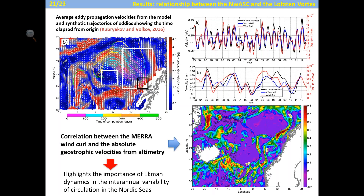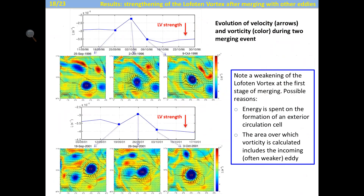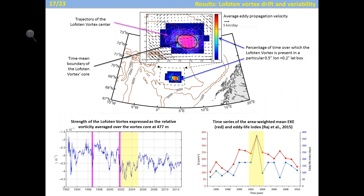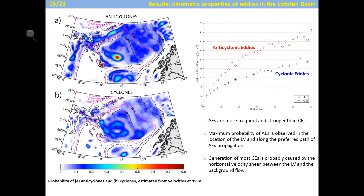When asked how large cyclonic eddies are, the speaker notes from the scatter plot that cyclonic eddies are generally smaller and weaker than anticyclonic ones. They are mostly observed on the periphery of the Lofoten Vortex due to the velocity shear between the vortex and the background cyclonic flow.